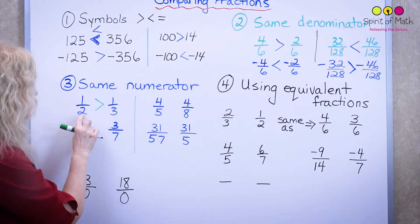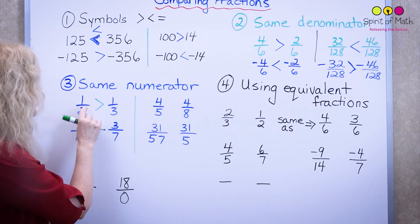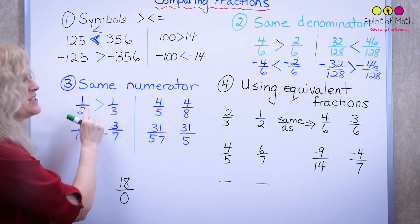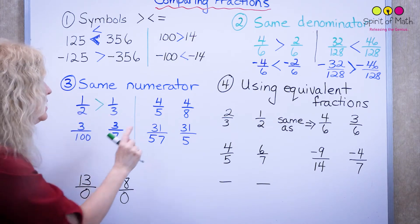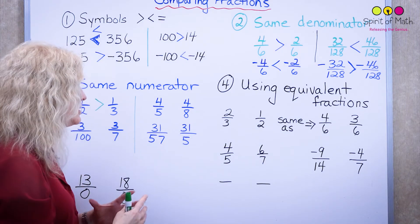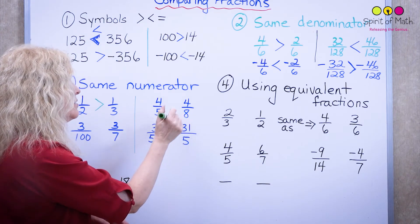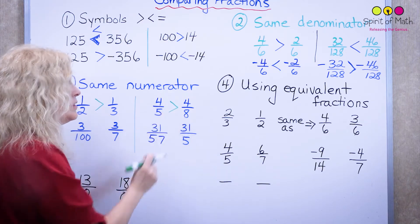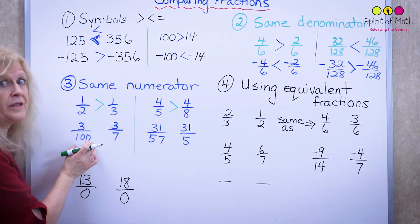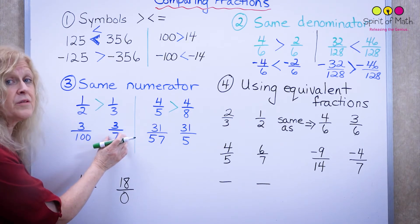When the denominator is smaller, the whole fraction is larger — as long as the numerator is the same. So you look at the size of pieces relative to each other. An eighth is smaller than a fifth, so four-eighths is smaller than four-fifths. A hundredth is much smaller than a seventh, so three one-hundredths is much smaller than three-sevenths.